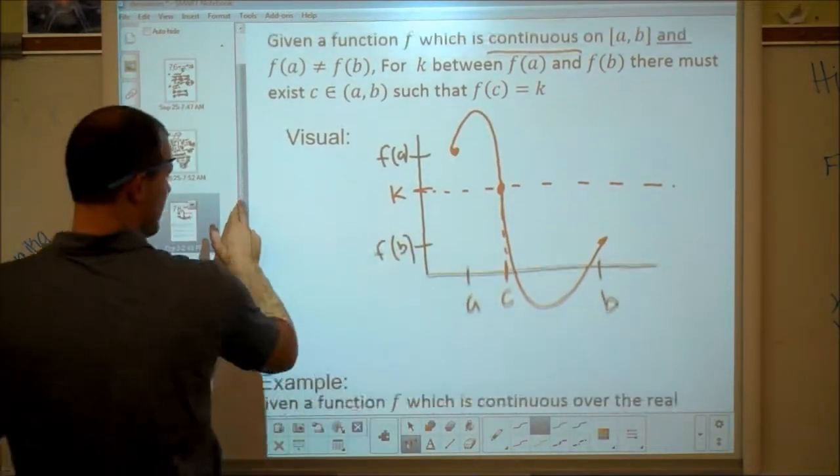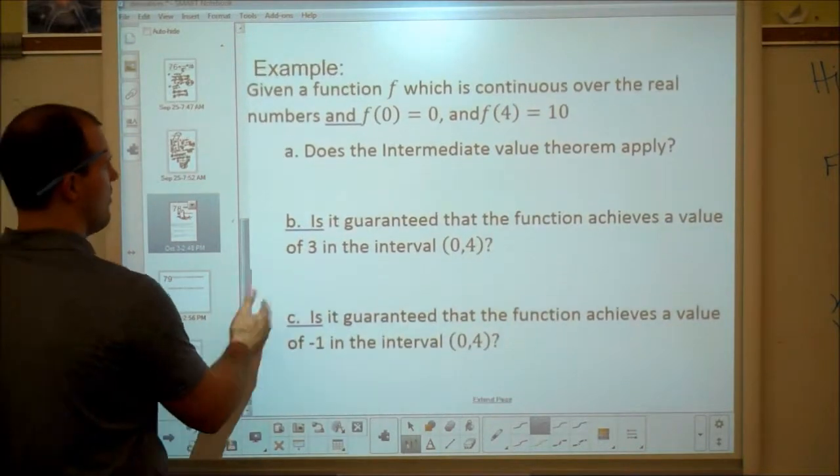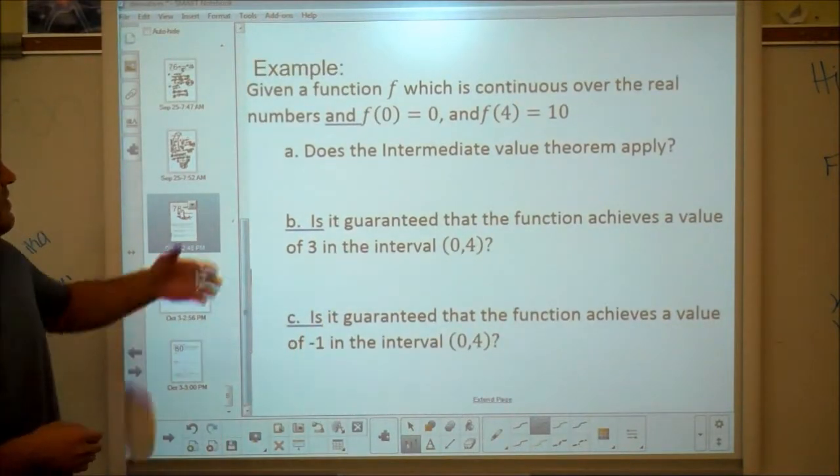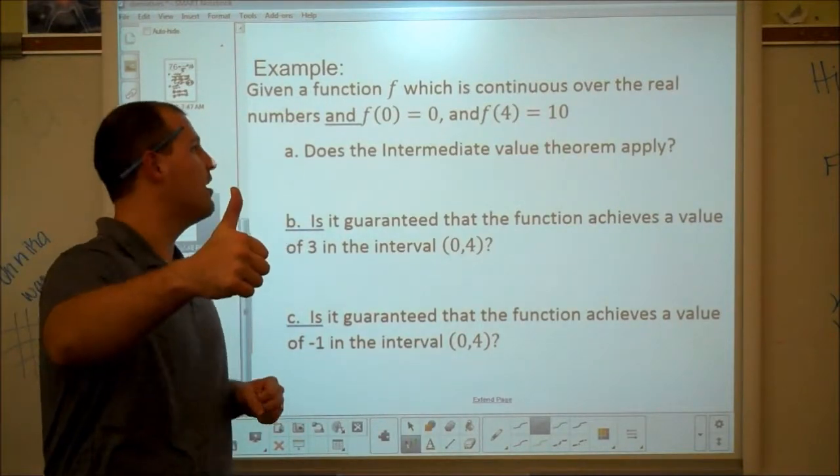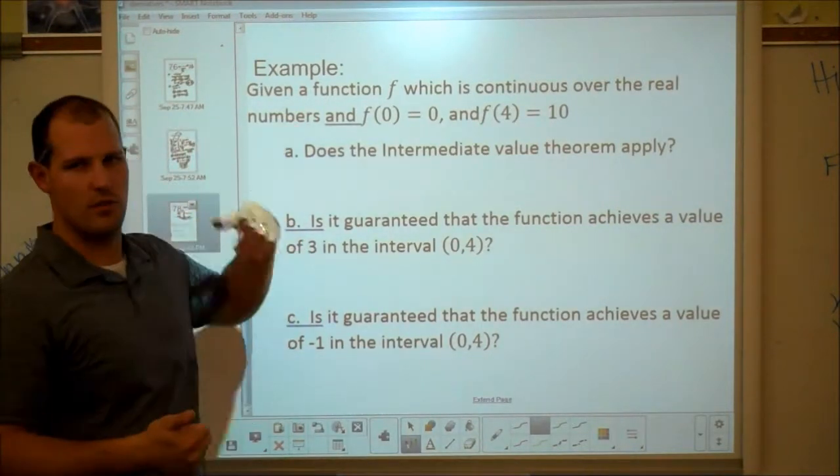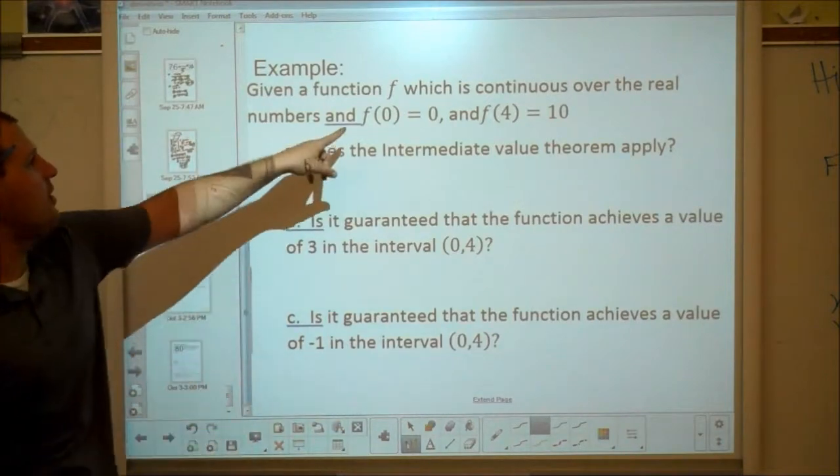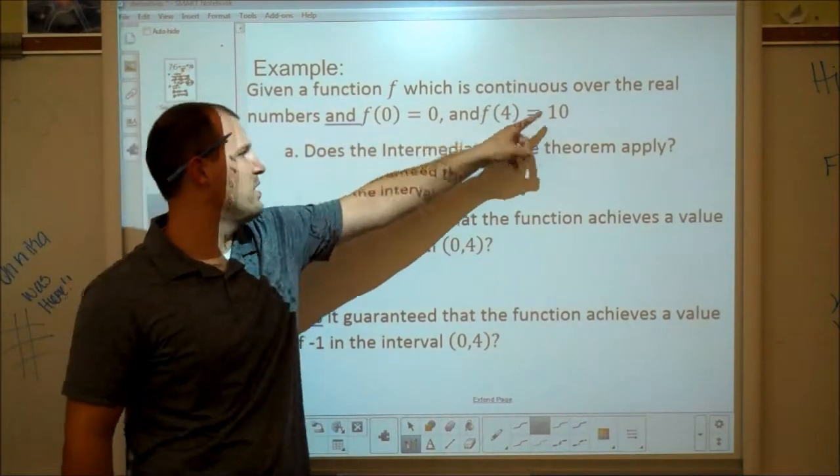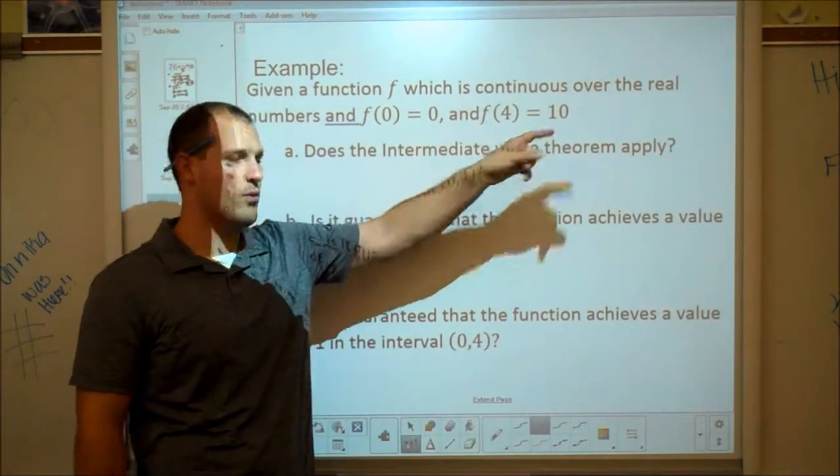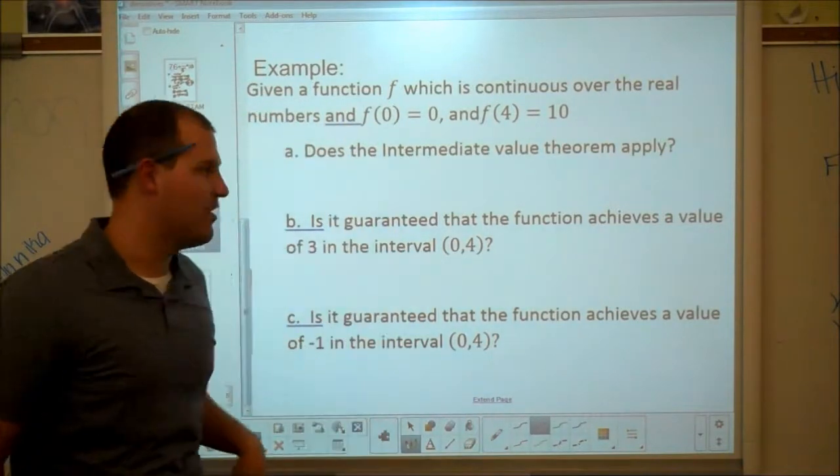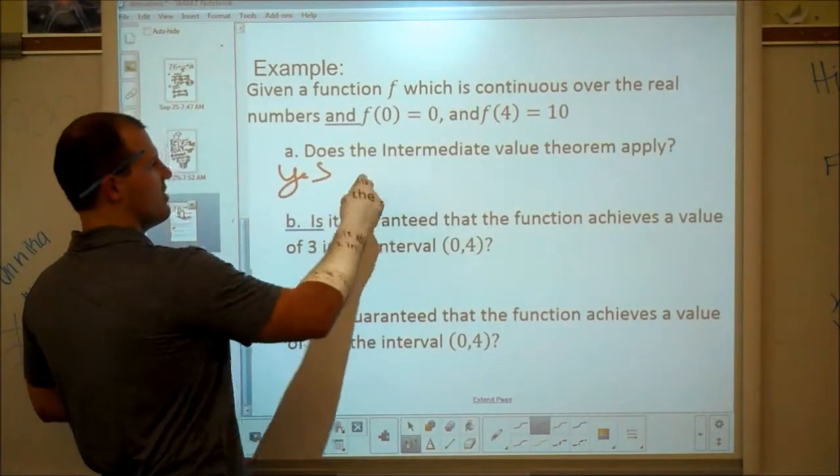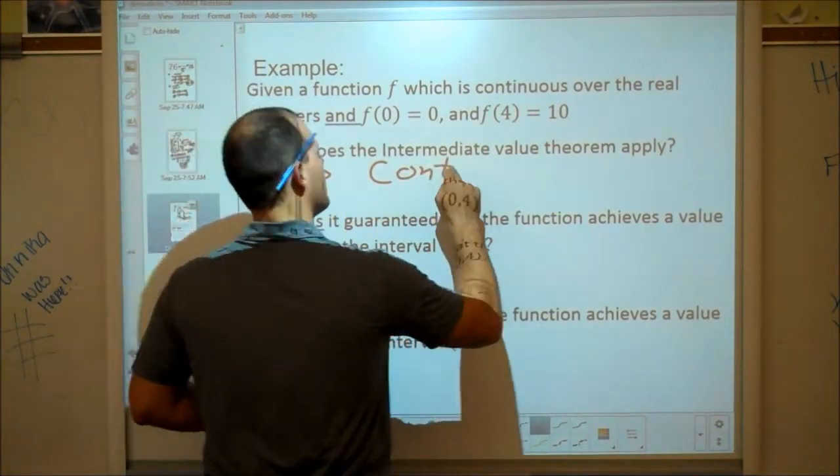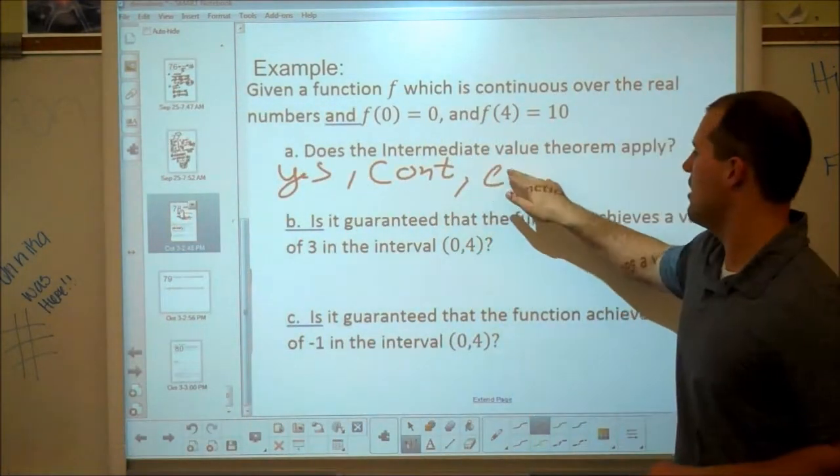Let's look at a quick example. We've got a couple questions to go with it. So given some function F that's continuous, first of all, it meets the criteria of the intermediate value theorem. It's continuous over all the real numbers. And F of 0 is 0 and F of 4 is 10. Think of those as your endpoints. Not equal. That means the second criterion of the intermediate value theorem. So first of all, does it apply? Yes, it does.